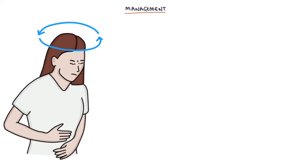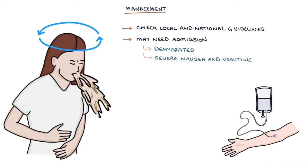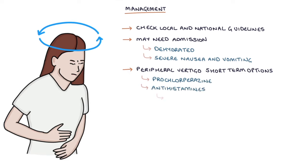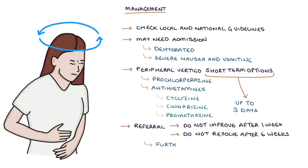Let's talk about management. The management here is adapted from the NICE clinical knowledge summaries updated in 2017 — always check local and national guidelines when treating patients. Patients may need admission if they're becoming dehydrated due to severe nausea and vomiting. For peripheral vertigo, short-term options for managing symptoms include prochlorperazine or antihistamines, for example cyclizine, cinnarizine, or promethazine. NICE advises that symptomatic treatment can be used for up to three days, as extended use may slow recovery. NICE also recommends referral if symptoms do not improve after one week or do not completely resolve after six weeks, as they may need further investigations or vestibular rehabilitation therapy (VRT).